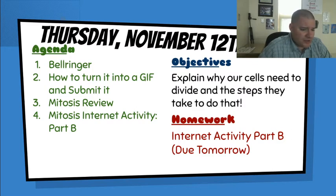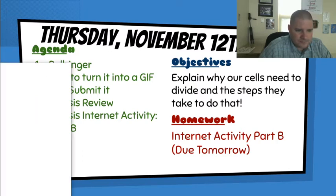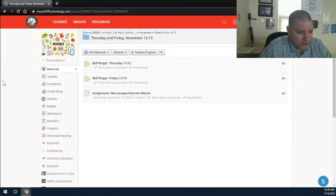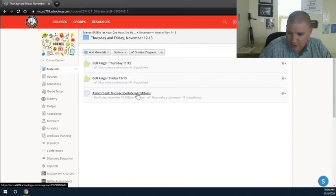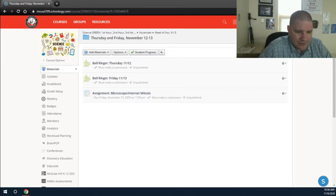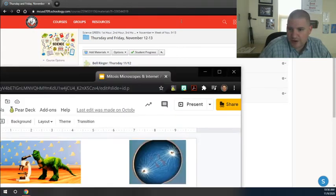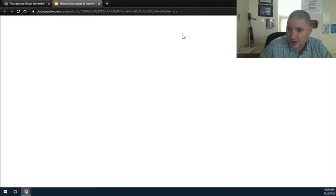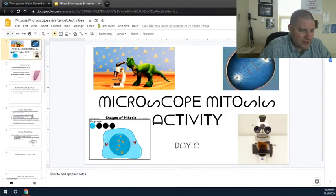We're actually going to click on the mitosis internet activity part B. So if you go to Schoology, which let me bring it up. Here is Schoology for today. There's your bell ringer. Make sure you answer that. But you want this microscope slash internet mitosis. That's what we're working on today. I'm going to click on that and bring it up here. We've already got another window, so I'm just going to bring that right over here with it. Load it up.